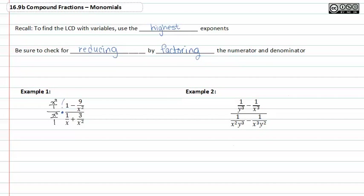We do this by distributing the x squared to both terms in the numerator and both terms in the denominator. When we do this, we get x squared minus nine x squared over x squared, all divided by x squared over x, plus three x squared over x squared.